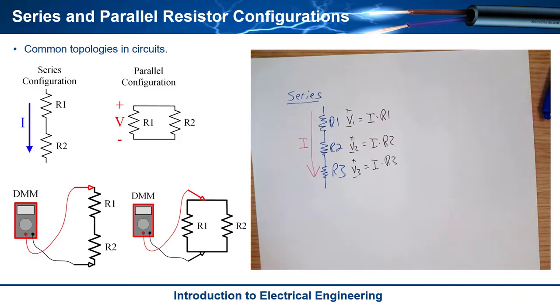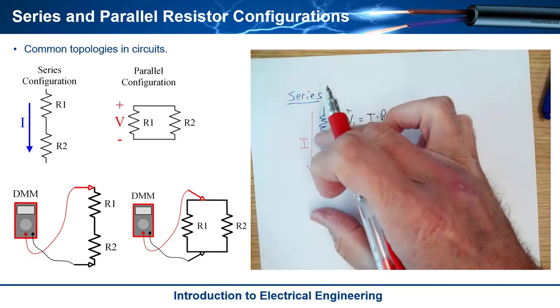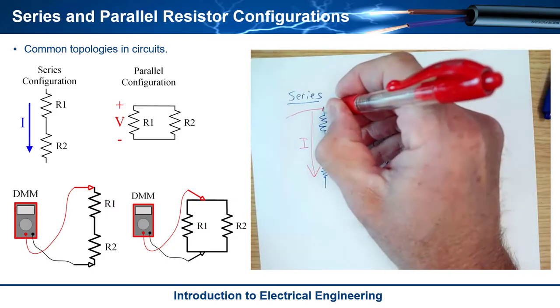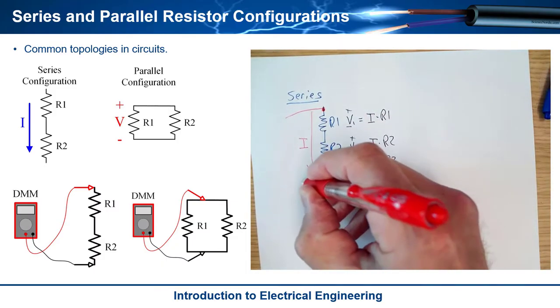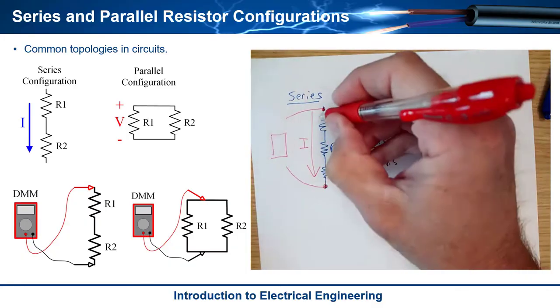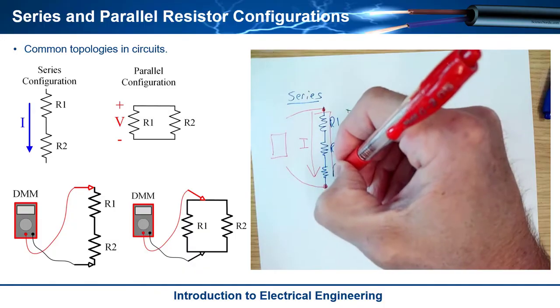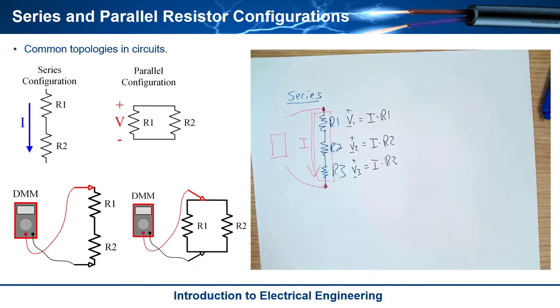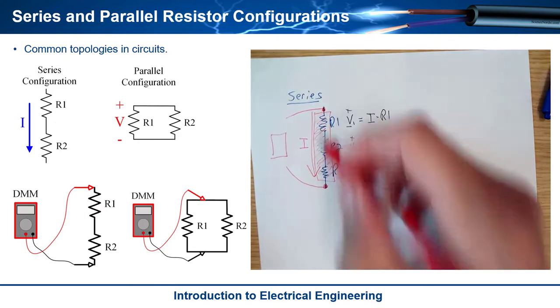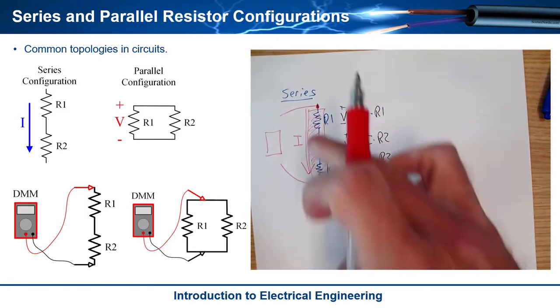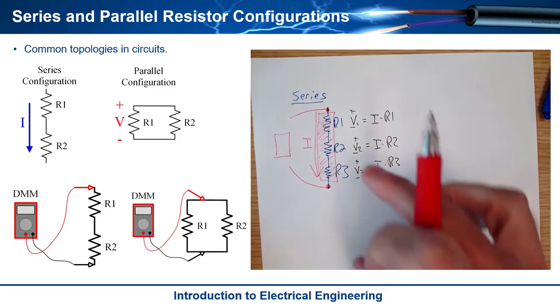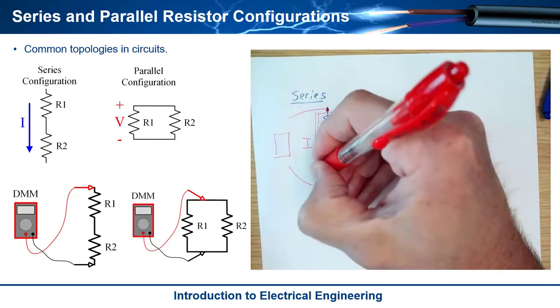If I wanted to know the equivalent resistance of this series combination, what I would do is I would actually measure right here with a multimeter. Okay, so I could come over here and I could measure this with a multimeter in resistance mode. And that would essentially give me what the equivalent resistance of this combination is. So think of this as now we just treat this as kind of like a black box that has, we know its resistance, but we don't really care. It's made up of three resistors.